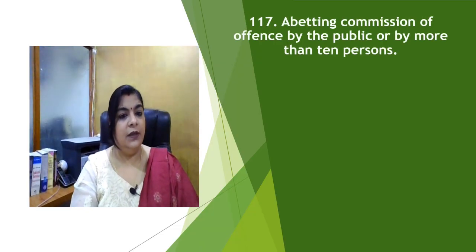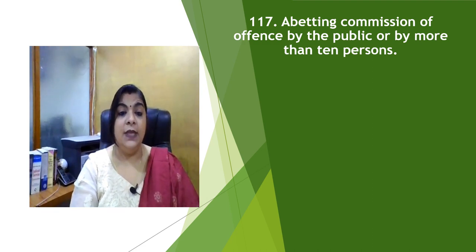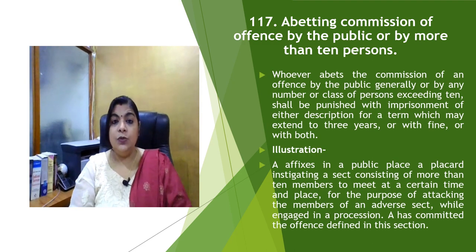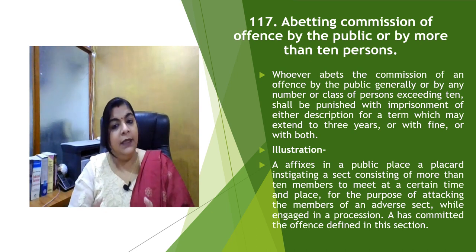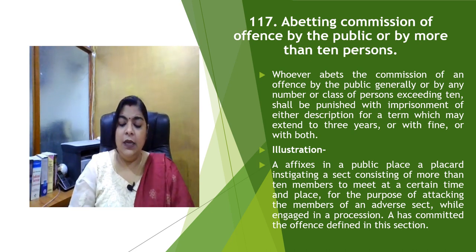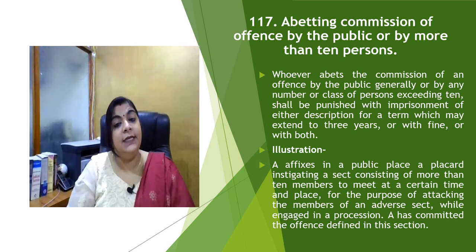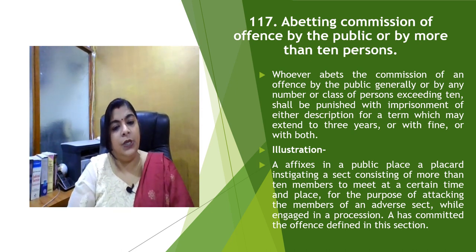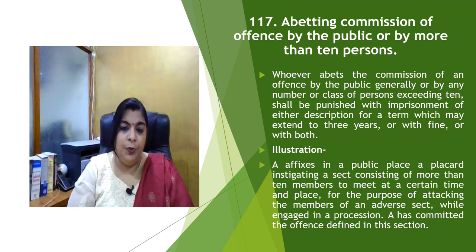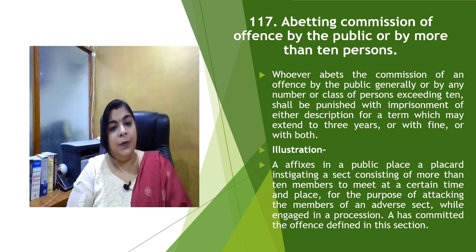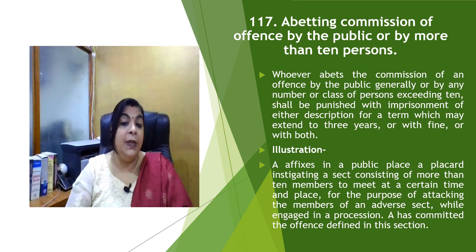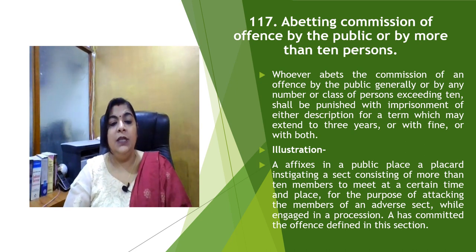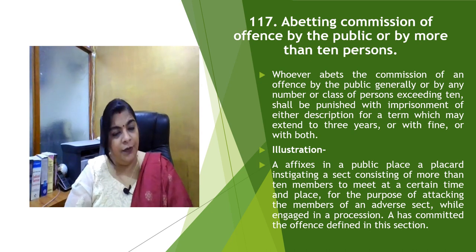Section 117 speaks about abetting commission of an offense by the public or by more than 10 persons. Whoever abets the commission of an offense by the public generally or by any number or class of persons exceeding 10 shall be punished with imprisonment of either description for a term which may extend to 3 years, or with fine, or both. That means if any person is abetting more than 10 persons or the public at large to commit any sort of offense, the person will be punished with 3 years of punishment or with fine or both.